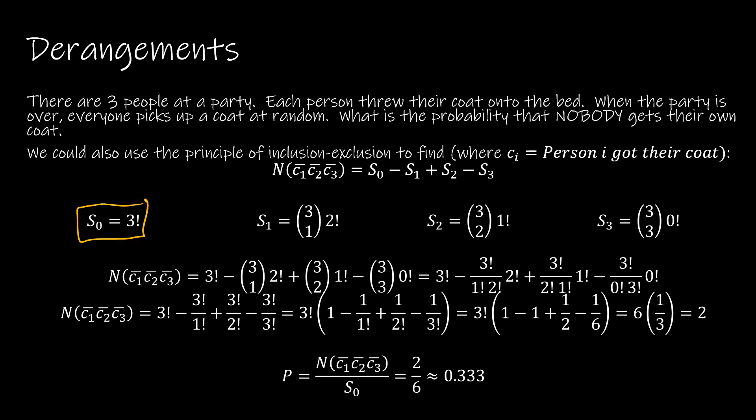There are three factorial total ways that we could distribute the coats. The first person has three choices of a coat, the second person has two choices, and the last one just gets whatever is left over. Now, if we set one coat, we're saying person one gets their coat. So there's two coats left and two people, so two factorial ways to do it.